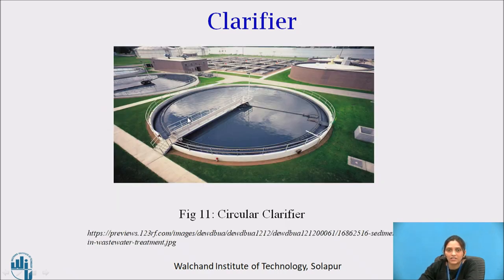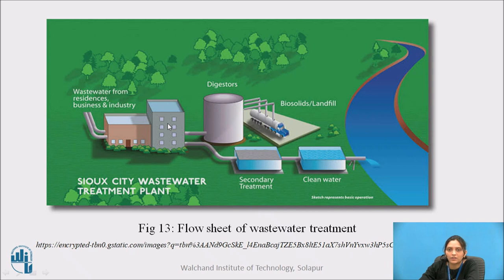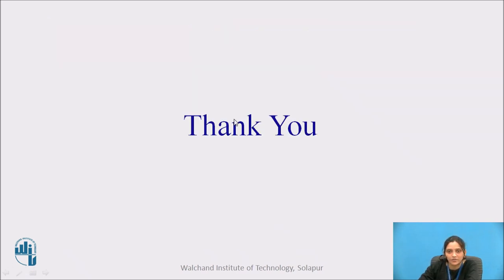This is what the clarifier looks like. After clarification, there is a process called chlorination — this is a picture of the chlorination tank. After chlorination, the water is treated and ready for disposal. It may be disposed into a natural source of water, or that pure water may be used for agriculture or some other purpose. These are my references for this video. Thank you very much for watching.